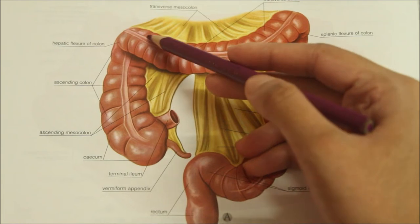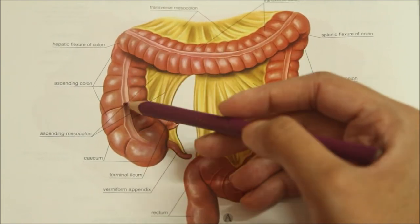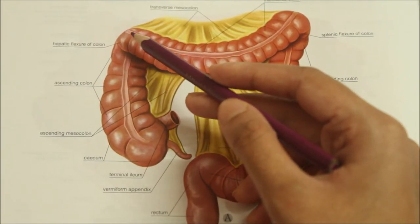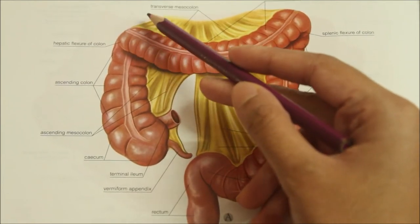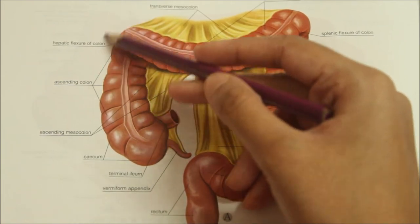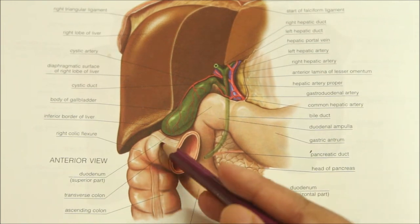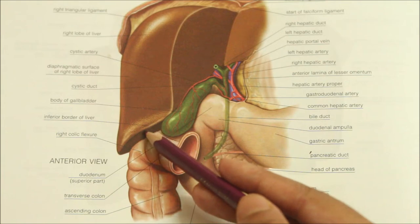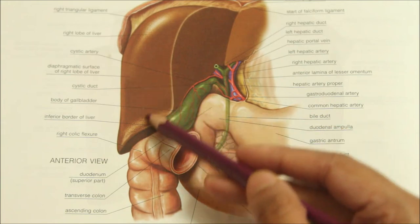The right colic flexure, or hepatic flexure, lies at the junction of the ascending colon and the transverse colon, on the lower part of the right kidney. Anterosuperiorly, it is related to the colic impression on the inferior surface of the right lobe of the liver.